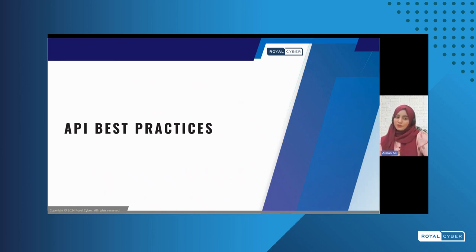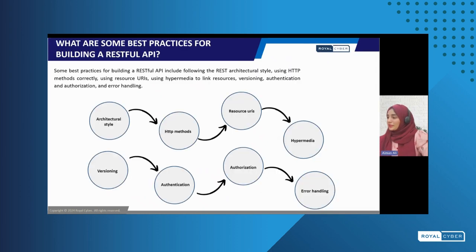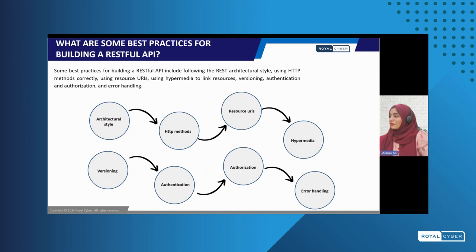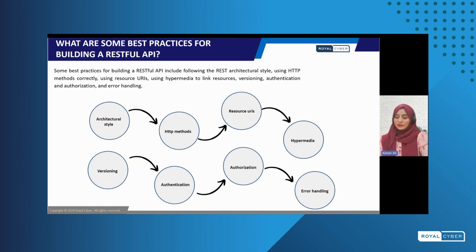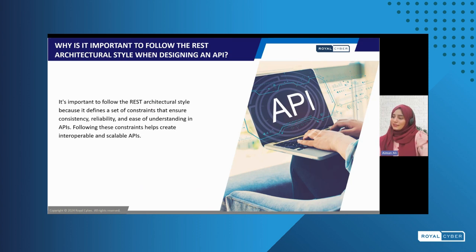Now let's move forward with some API best practices. Some of the best practices include the REST architectural style that we talked about, using HTTP methods correctly, using resource URIs, using hypermedia to link resources, versioning, authentication and authorization — which is very common nowadays and present in almost every application — and lastly, error handling. By following these practices, you can ensure your API or software is reliable, secure, and easy to use for both developers and users. Following the REST architectural style and keeping in mind all the constraints ensures your application or system is reliable, secure, and easy to use.